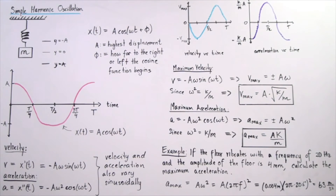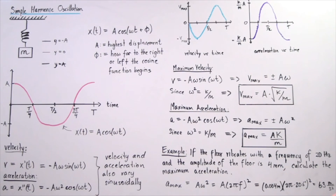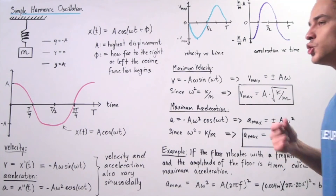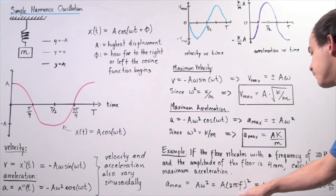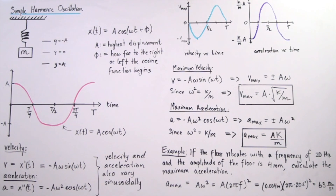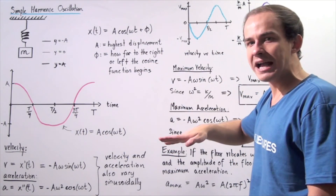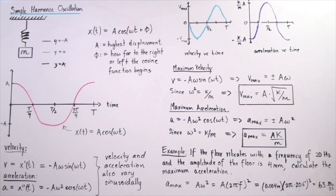Let's look at an example. If the floor in a factory vibrates with a frequency of 200 Hz and an amplitude of 4 millimeters, calculate the maximum acceleration. We use a_max = A·ω² = A·(2πf)². The frequency is 200 s⁻¹, and we convert 4 mm to 0.004 m. Multiplying out gives approximately 63 meters per second squared as the maximum acceleration — the maximum acceleration the factory floor reaches as it vibrates up and down.